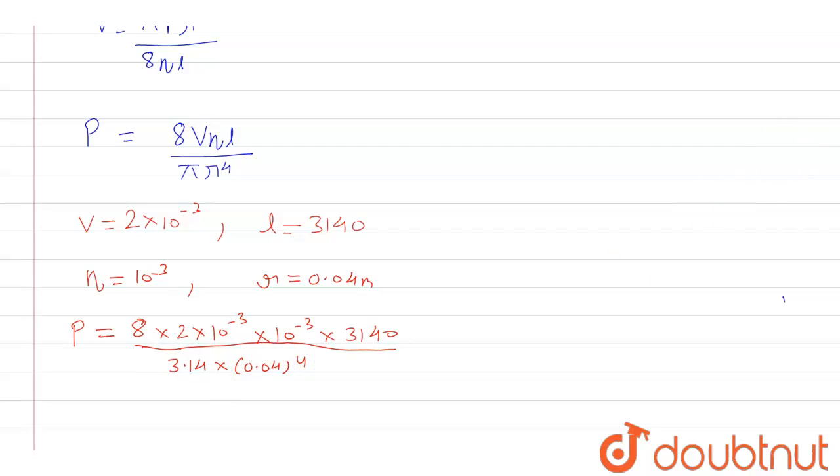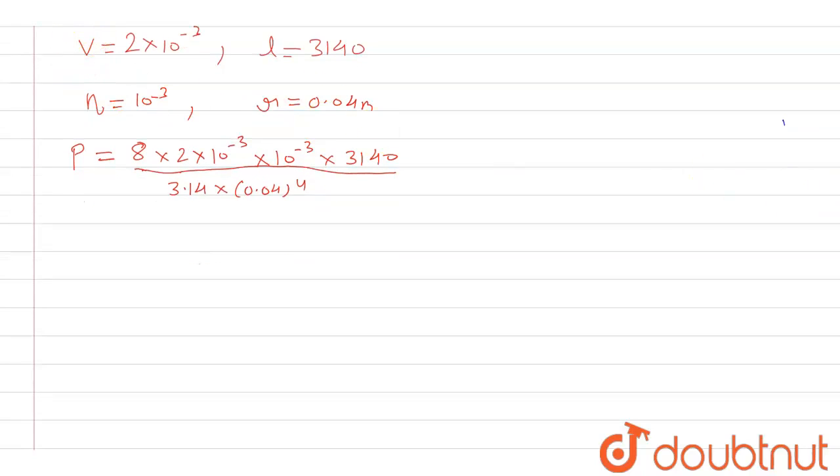Now further when we calculate this we get the value of pressure and that will come out as 6.25 into 10 raised to the power 3 newton meter square.